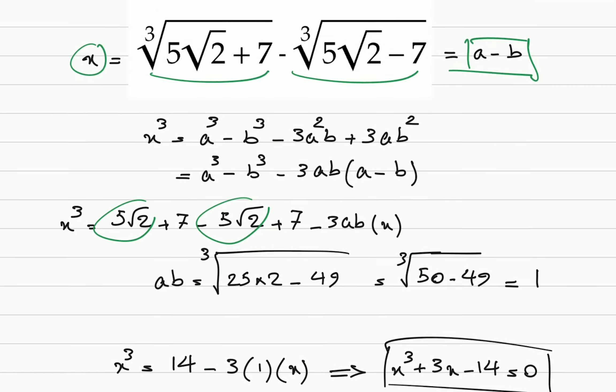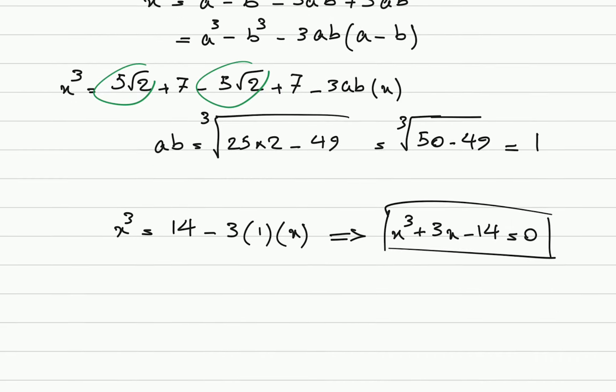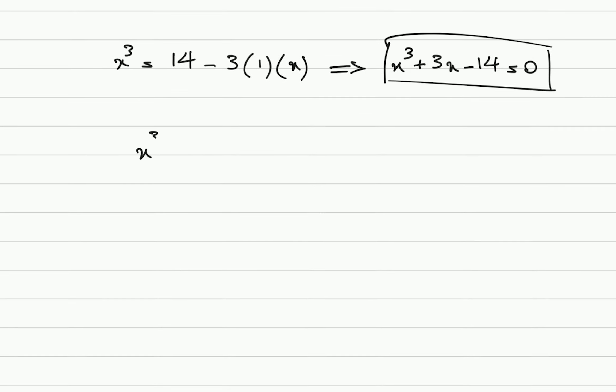What is x? x is the expression we had at the beginning, and if we find x, it's just like we have simplified it. Alright, so how do we solve this? x cube plus 3 times x minus 14 equals 0.